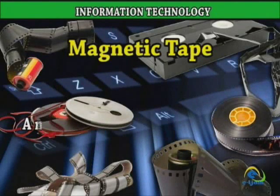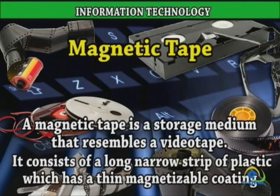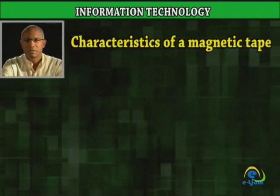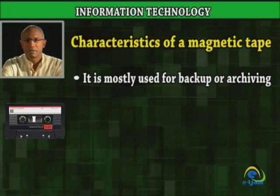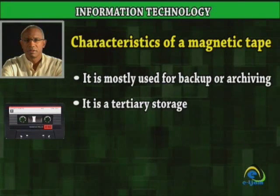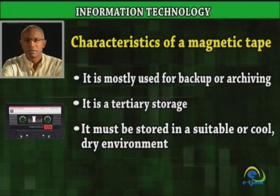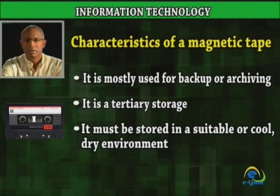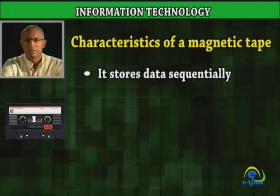Magnetic Tape. A magnetic tape is a storage medium that resembles a videotape. It consists of a long, narrow strip of plastic which has a thin, magnetizable coating. The characteristics of a magnetic tape are: it is mostly used for backup or archiving, it is a tertiary storage, and it must be stored in a suitable or cool, dry environment. It stores data sequentially.